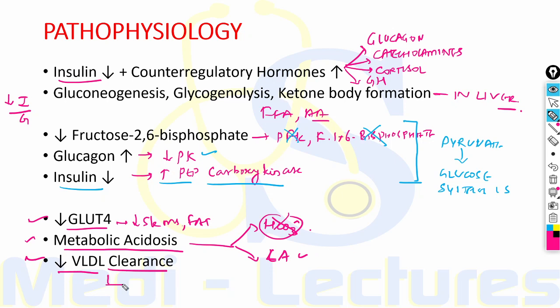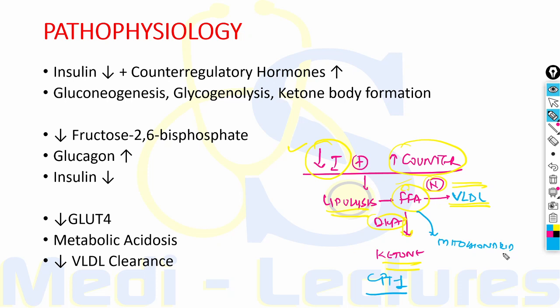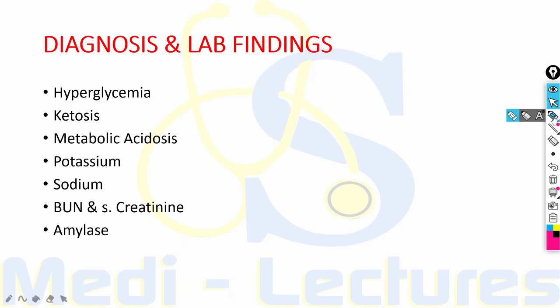In DKA, there is also decreased VLDL clearance due to decreased activity of insulin-sensitive lipoprotein lipase present in muscle and fat. Due to insulin deficiency and increased counter-regulatory hormones, lipolysis occurs, releasing free fatty acids. Normally, these free fatty acids form VLDL in the liver, but in DKA, due to increased glucagon and altered hepatic metabolism, they are shifted toward ketone body formation via CPT1 (carnitine palmitoyl transferase 1), which transports free fatty acids to the mitochondria for beta-oxidation and ketone body formation.